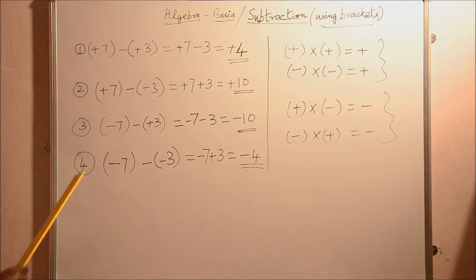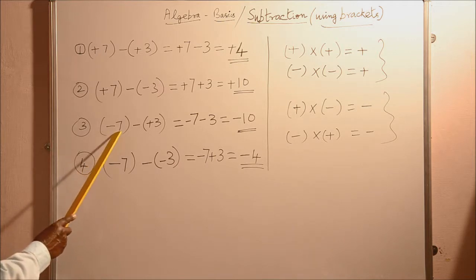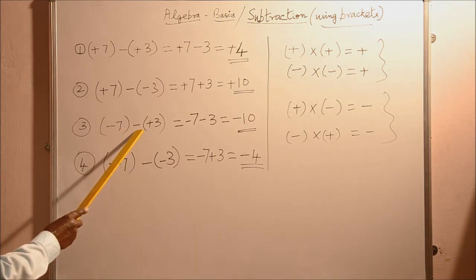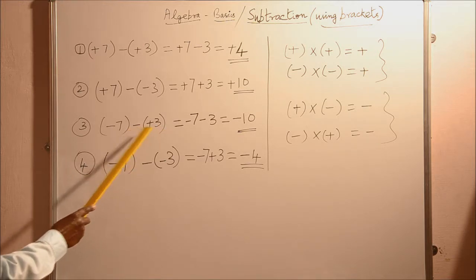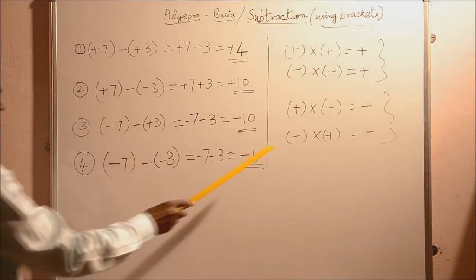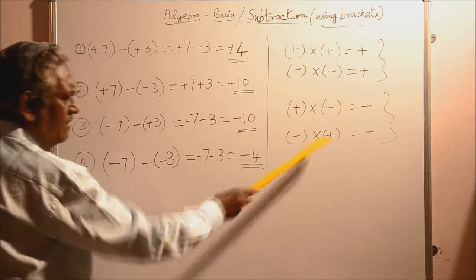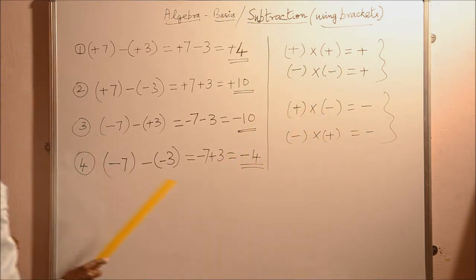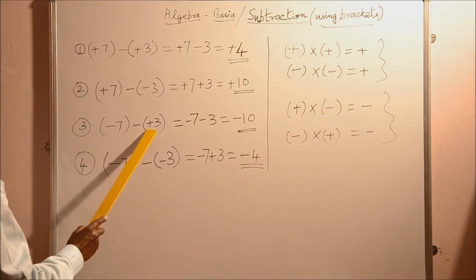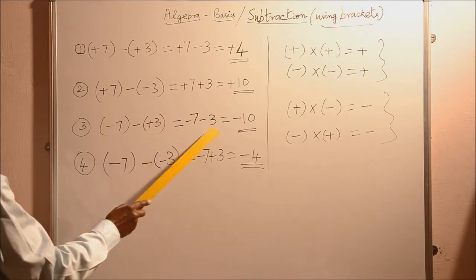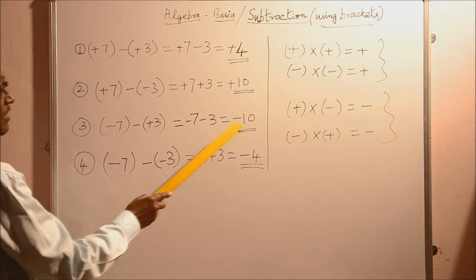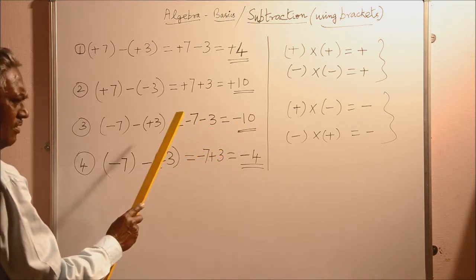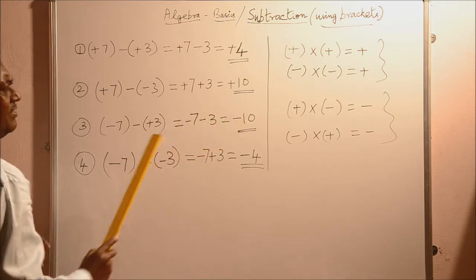The next one: minus 7 minus of plus 3. When you remove the bracket, this becomes minus into plus. Minus into plus is minus — different signs, therefore you have got the minus sign. So this minus into plus becomes minus, therefore minus 3. Minus 7 minus 3. When you add these two, that gives you minus 10. You have got the same sign, so add them and put the same sign.